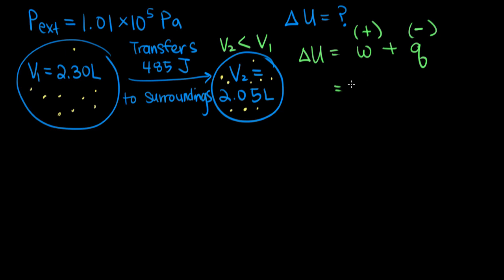We can also calculate work, because we know the external pressure, we know it's constant, and work can be calculated as the external pressure times the change in volume, and we know both of those things. We know the external pressure, and we know the initial and final volumes.